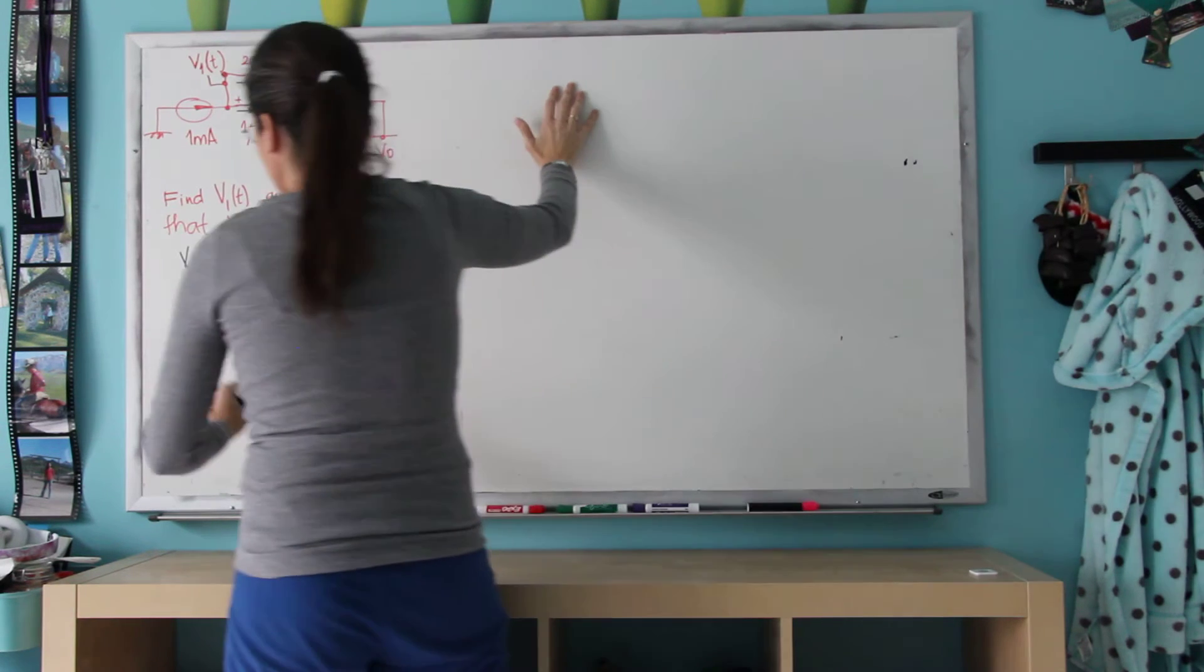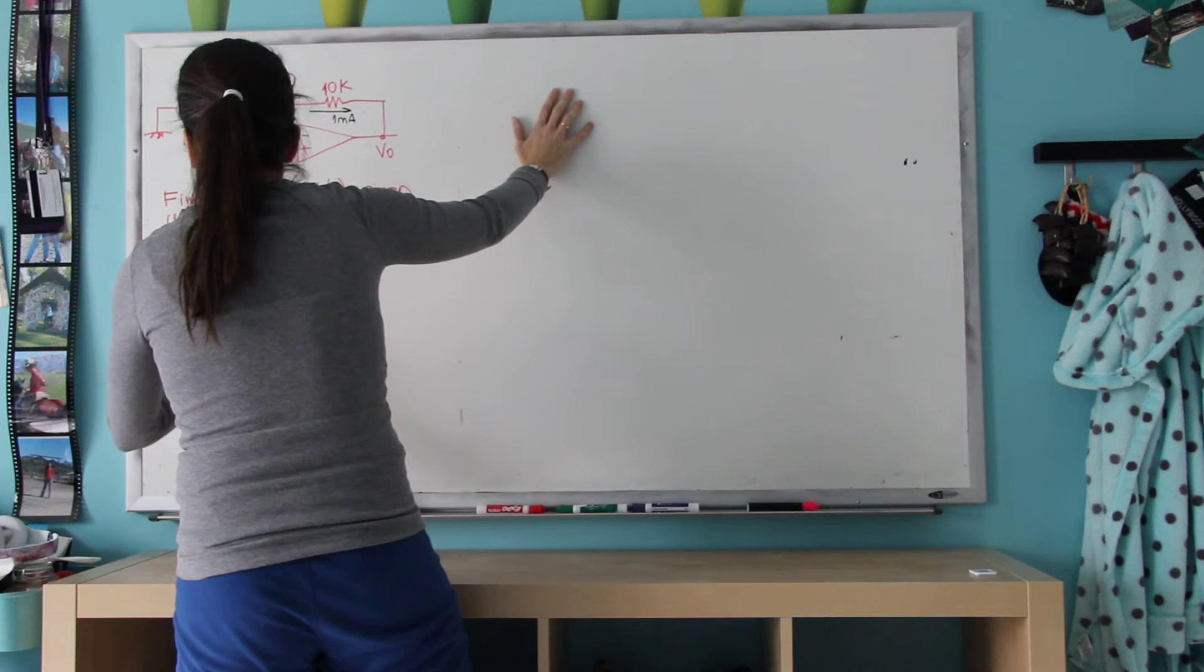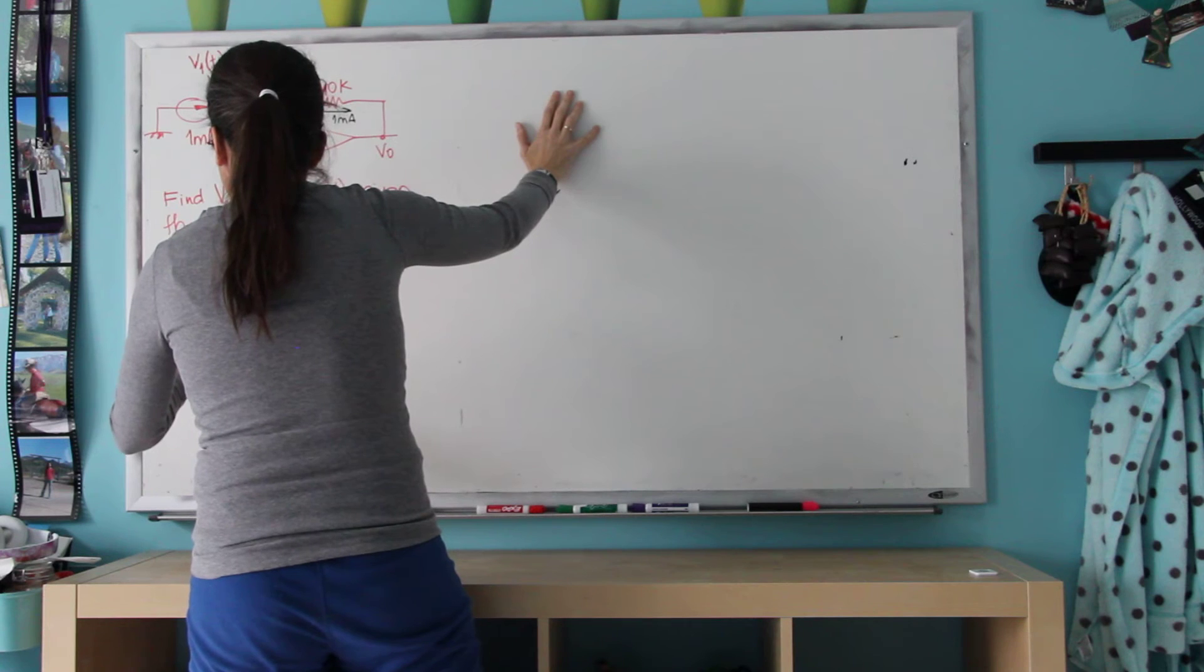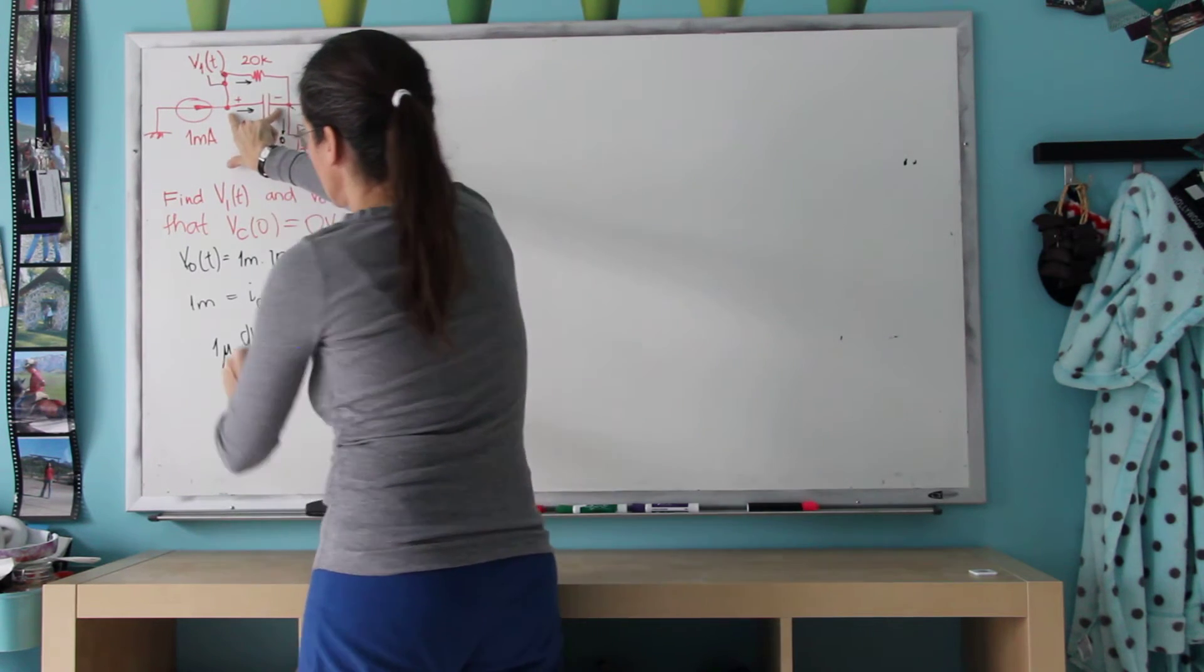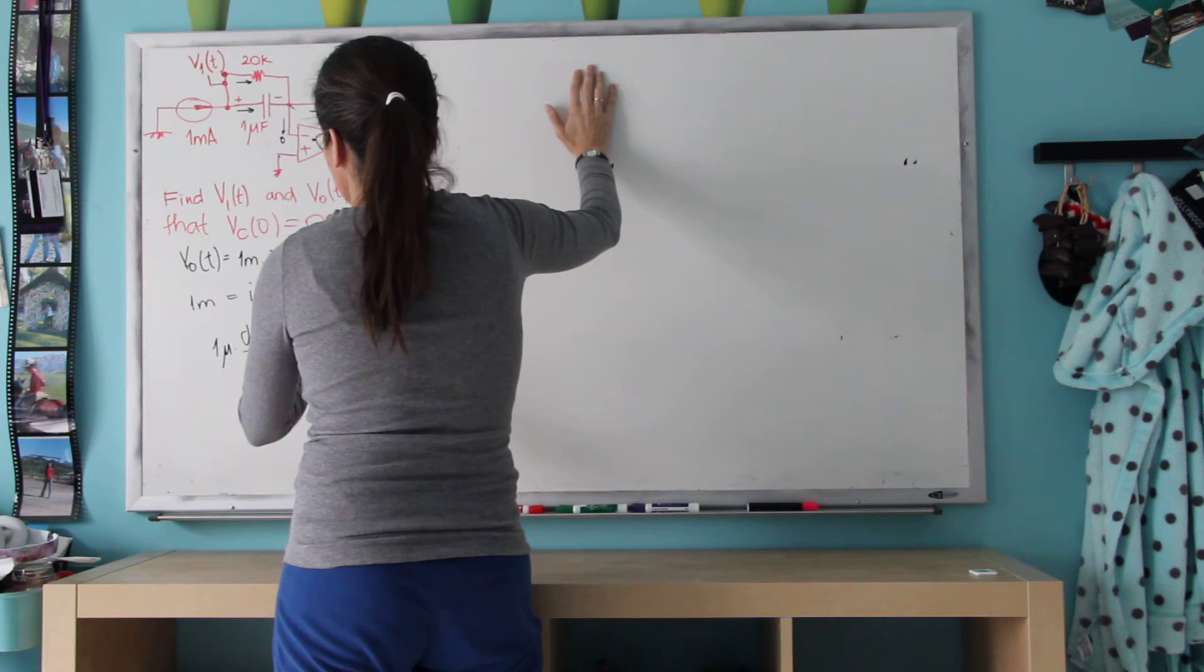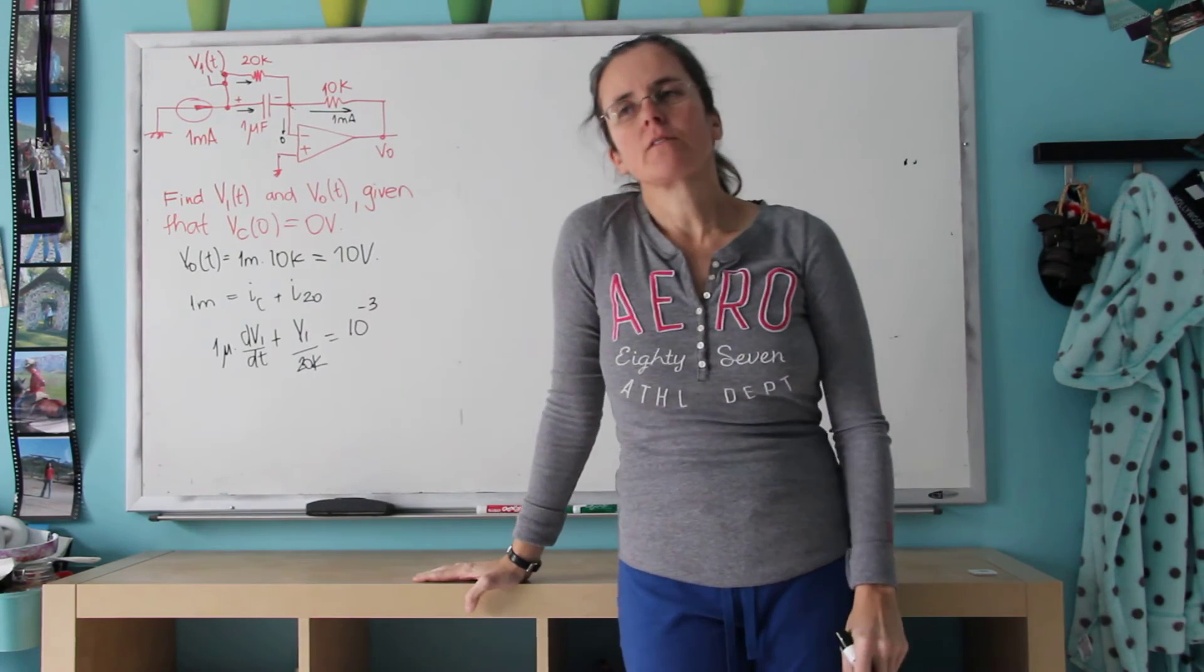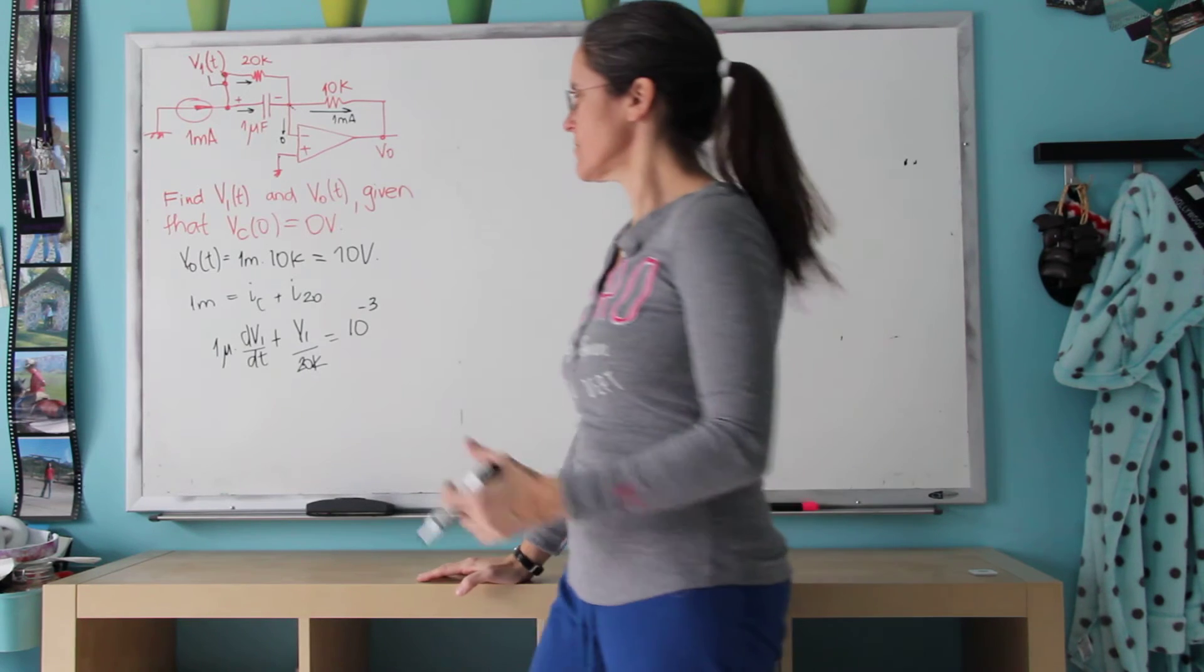So 10 to the minus 3 equals dV1 dt times 1 millifarad plus V1 divided by 20k. So this is the first order equation, and it's very similar to the RC circuits we've been doing.